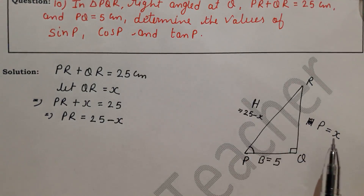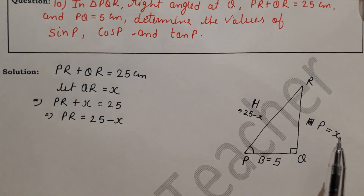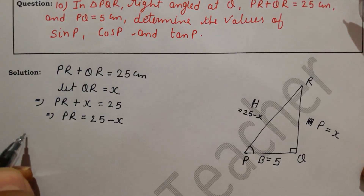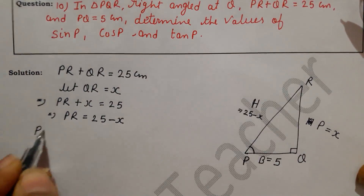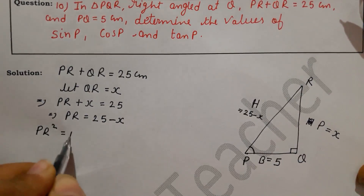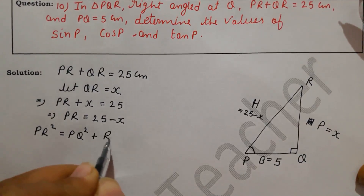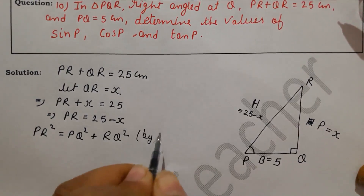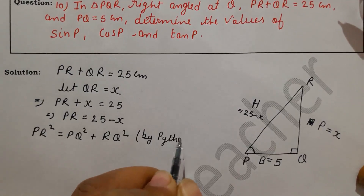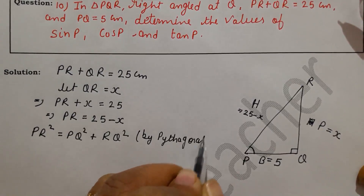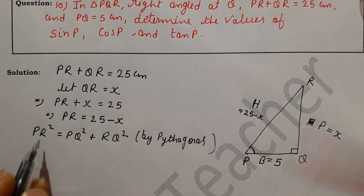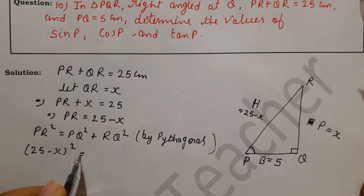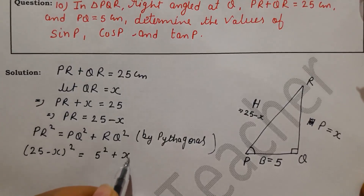Now the triangle is complete in terms of variables, and we can use the Pythagoras theorem to solve for one variable. Using Pythagoras theorem: PR squared equals PQ squared plus RQ squared.